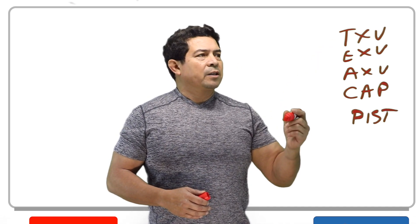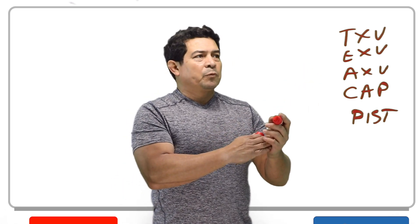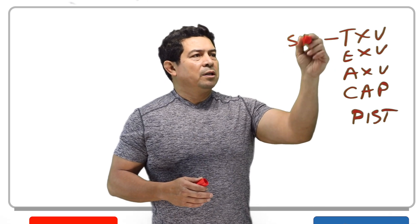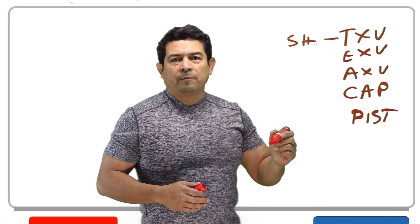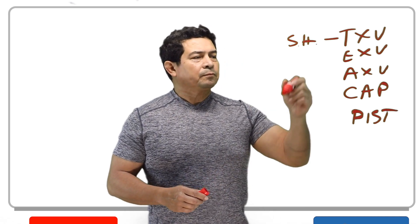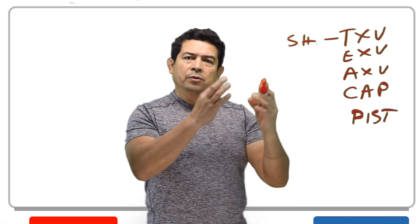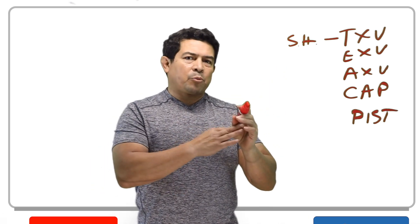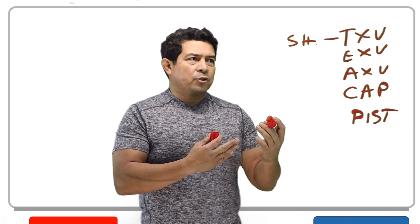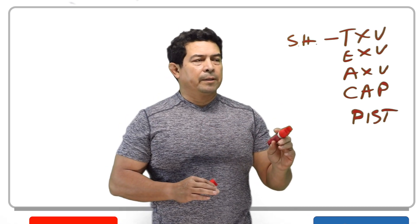The thermostatic expansion valve — it has to do with temperature, but actually what it does is it maintains superheat in the evaporator. It makes sure that the superheat in the evaporator is right where it's supposed to be. It's going to open and close to maintain that proper superheat. They usually come preset from the manufacturer, but sometimes we have to adjust them.